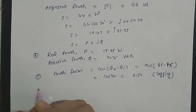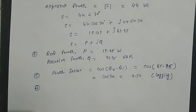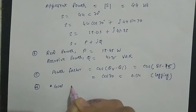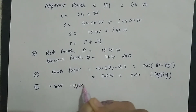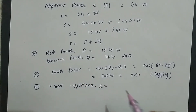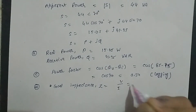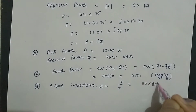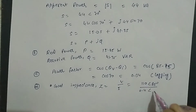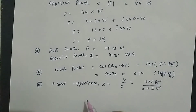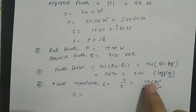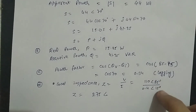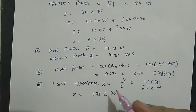Next पूछा गया load impedance। Z = V/I। V = 110∠85° और I = 0.4∠15°। Division में magnitudes divide होते हैं और angles subtract होते हैं: 110/0.4 = 275, और angle = 85° − 15° = 70°। तो Z = 275∠70° ohm।